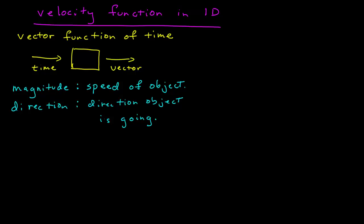In this video, I want to introduce the velocity function in one dimension. The velocity function is a vector function of time, just as the position function is also a vector function of time — meaning you input some time and it outputs a vector. The magnitude of this vector tells you the speed of the object, and the direction tells you the direction the object is going at that instant.